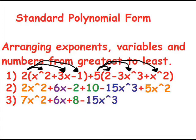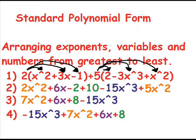Now you have to combine like terms. 2x squared plus 5x squared gives you 7x squared, and negative 2 plus 10 gives you 8. So now your equation is 7x squared plus 6x plus 8 minus 15x cubed. Finally, you have to arrange all the exponents and variables in order from greatest to least. This gives you negative 15x cubed plus 7x squared plus 6x plus 8 as your final equation.